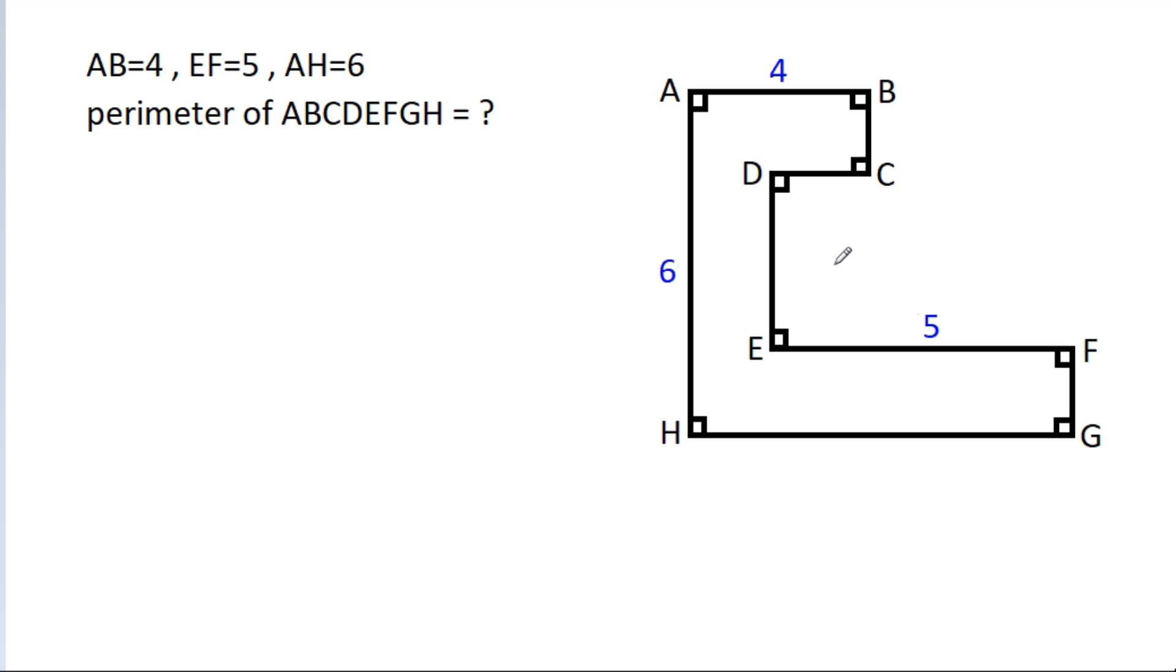If we draw a perpendicular from C on EF and GH, suppose this point is P and this point is Q. And suppose EP is X, then we have EF is 5, so PF will be 5 minus X.